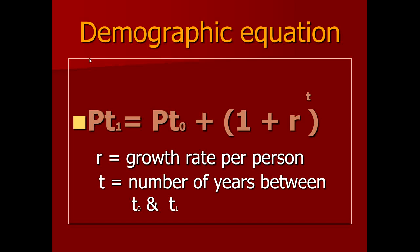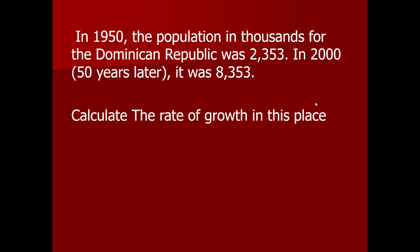We can also calculate population change using growth rates and the difference between two populations across time. The formula is PT1 = P0 × (1 + R)^T, where PT1 is the population at the new time period, P0 is the known earlier population, R is the growth rate, and T is the time period between the two populations. If the population was taken 10 years ago and we want to calculate after 10 years, T equals 10.